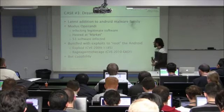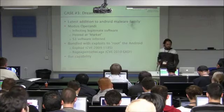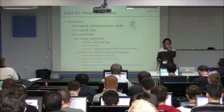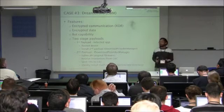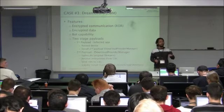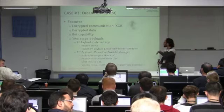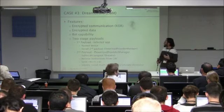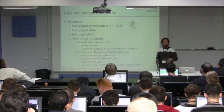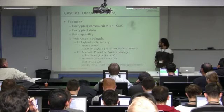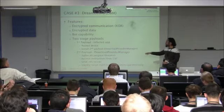CVE-2010 is another one they use. It also has market capability. DreamDroid features: encrypted communication with XOR, encrypted data, and bot capabilities. It has two-stage payloads — the first payload is the infected software used to root the device and install the second payload. The second payload is hidden in SPL light, a legitimate-looking Android application. It receives instructions from the CNC, which stands alone and installs itself within the system app directory by just copying the file.